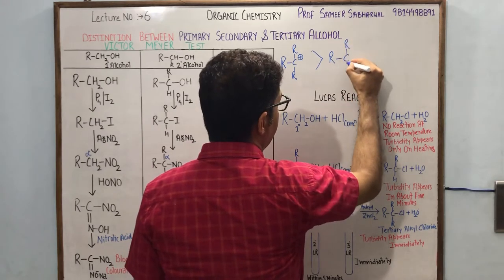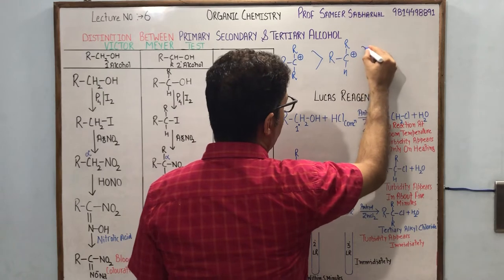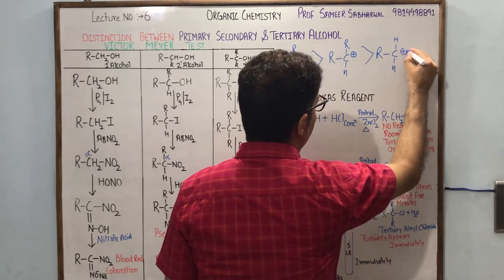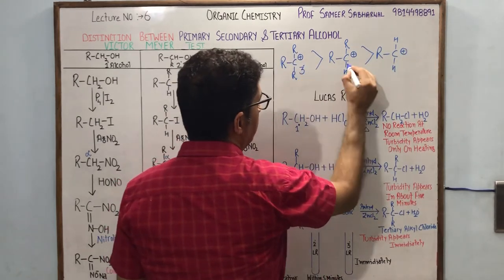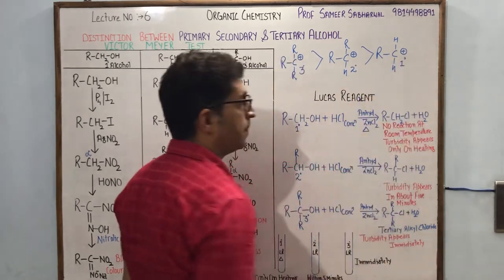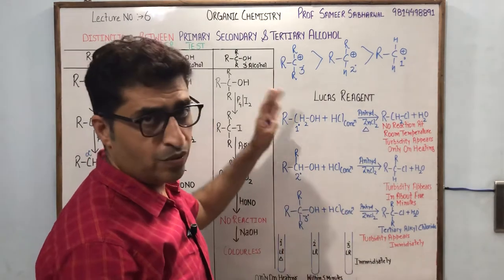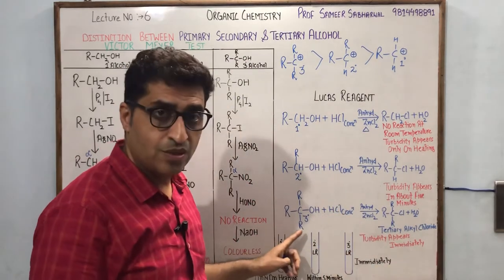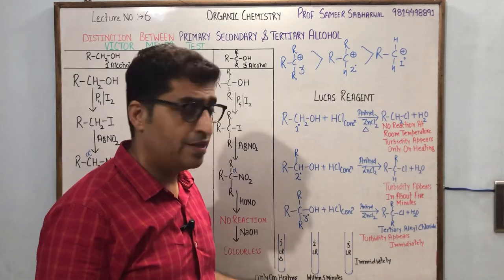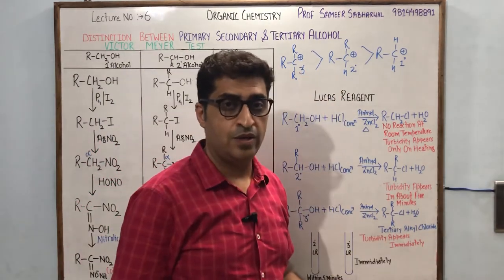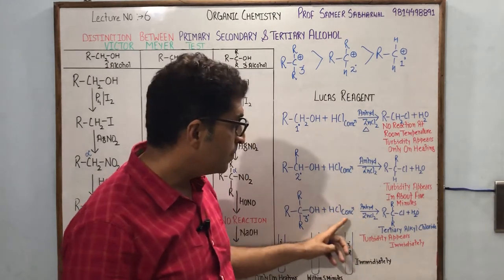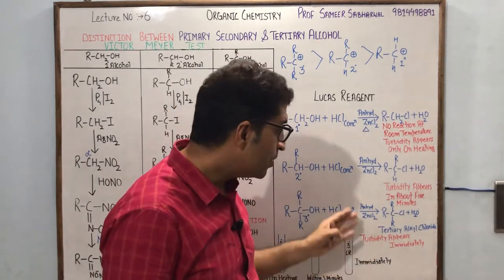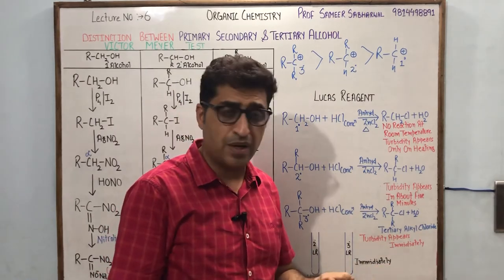The 3° carbocation is the most stable, 2° carbocation is less stable, and 1° carbocation is the least stable. Since in the case of tertiary alcohol we get a 3° carbocation, which is relatively more stable, anhydrous zinc chloride with HCl reacts with tertiary alcohol immediately to give turbidity — the solution becomes milky. OH negative is replaced by Cl negative because the carbocation is stable.